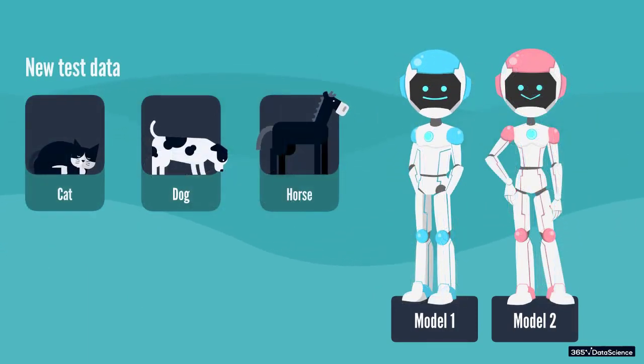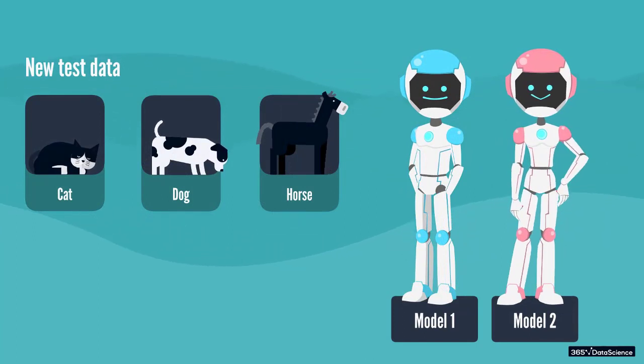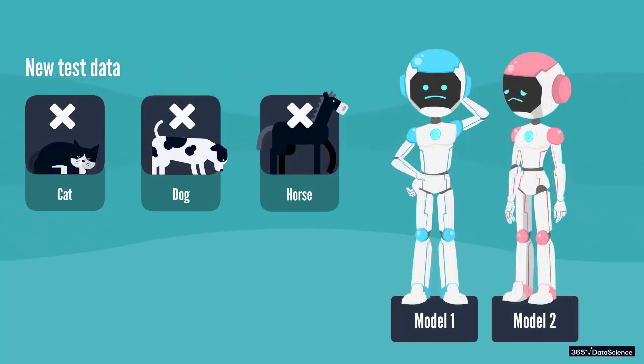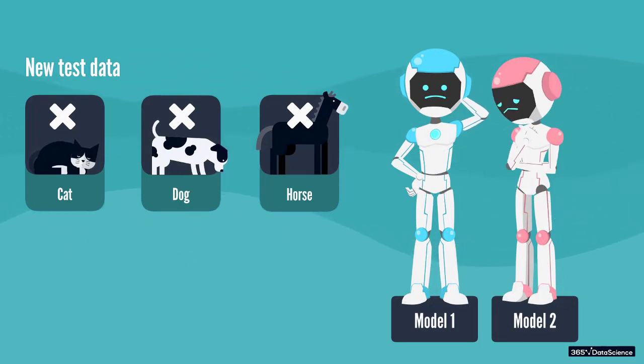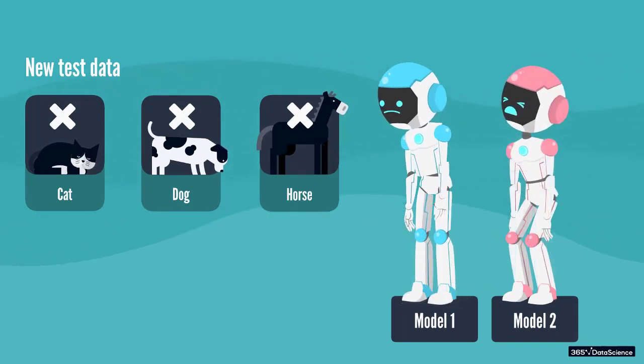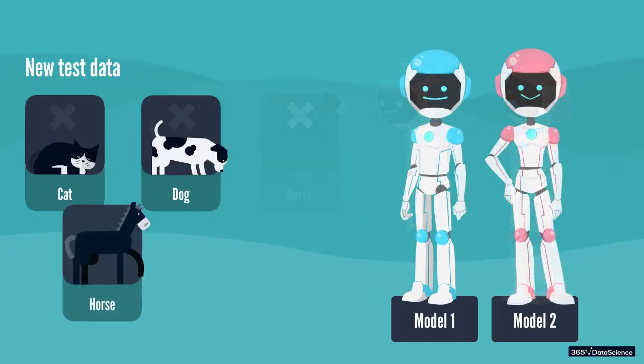However, it is often the case that during testing on a new dataset, the model won't perform as well as compared to the training phase. A lot of the time, the reason for that is the model will have incorporated some of the bias from the training data, and as a result, it is unable to generalize with the same accuracy on a new dataset during testing.